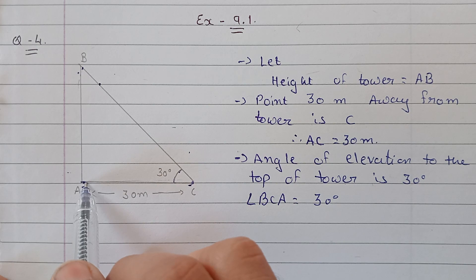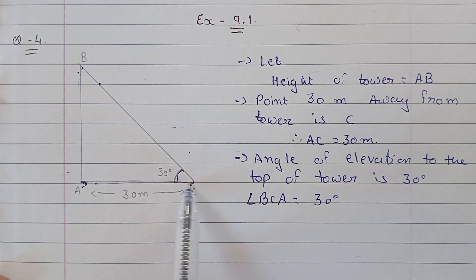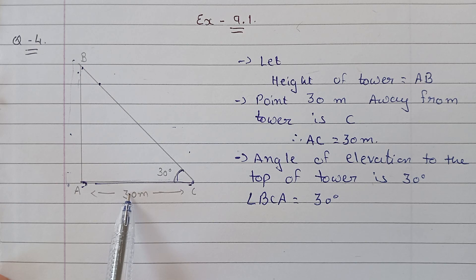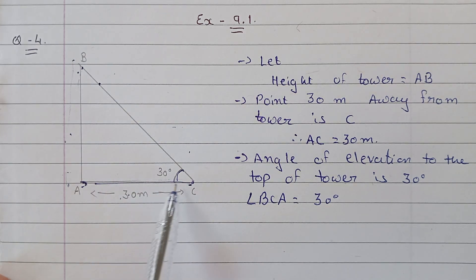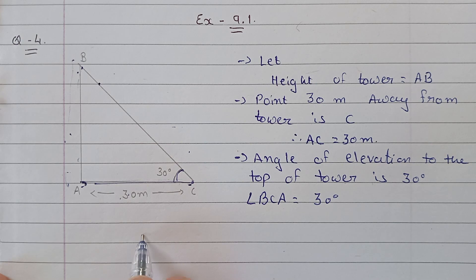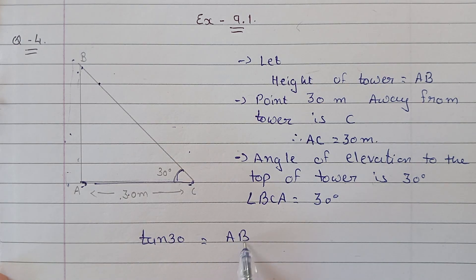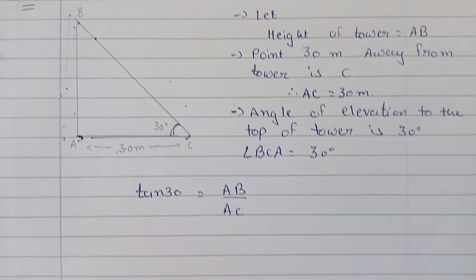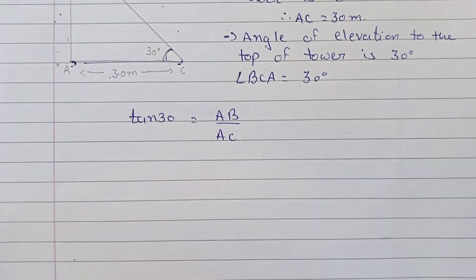the tower's height. Look, for 30 degrees, this is adjacent and this is opposite, so we use opposite upon adjacent formula. Opposite upon adjacent means tan 30. So by using tan 30, which is opposite upon adjacent, we can find the height.